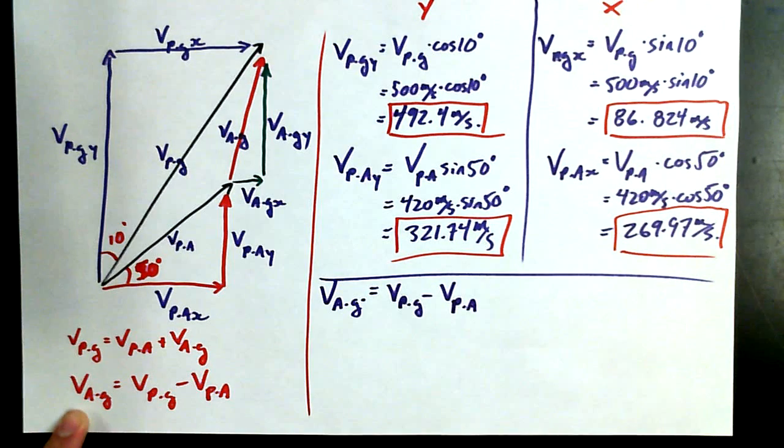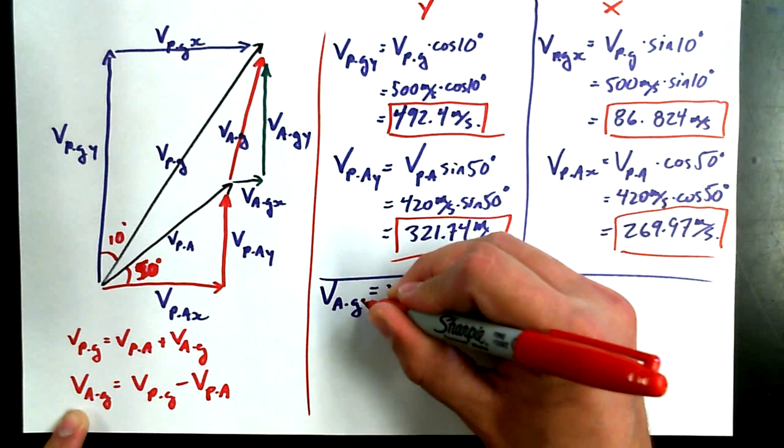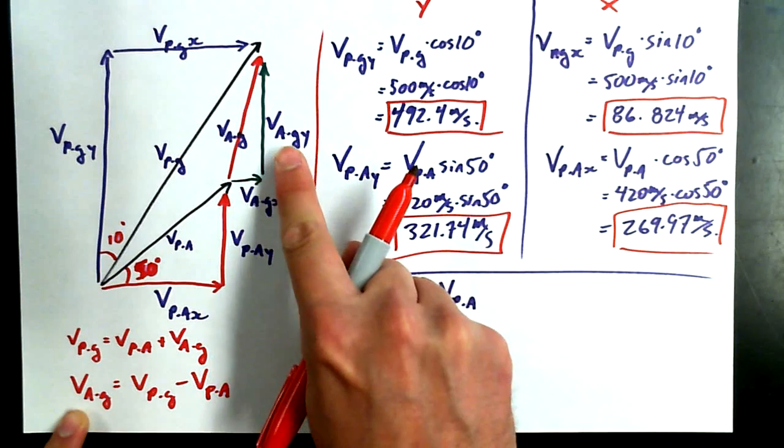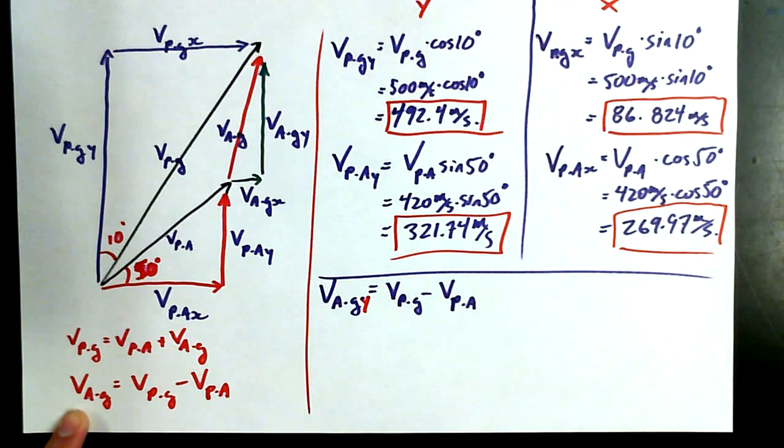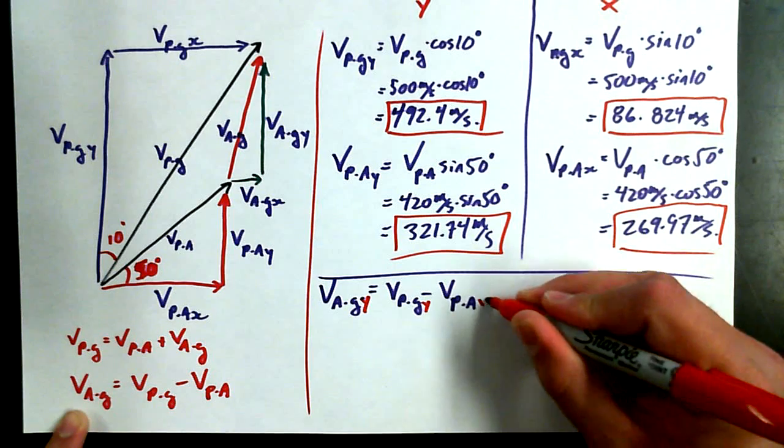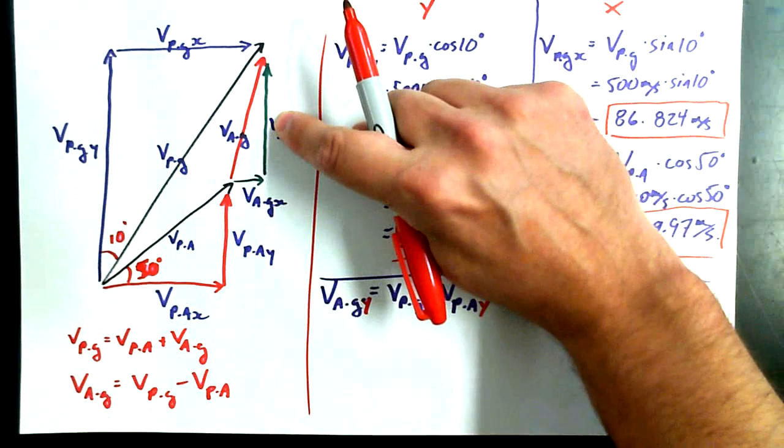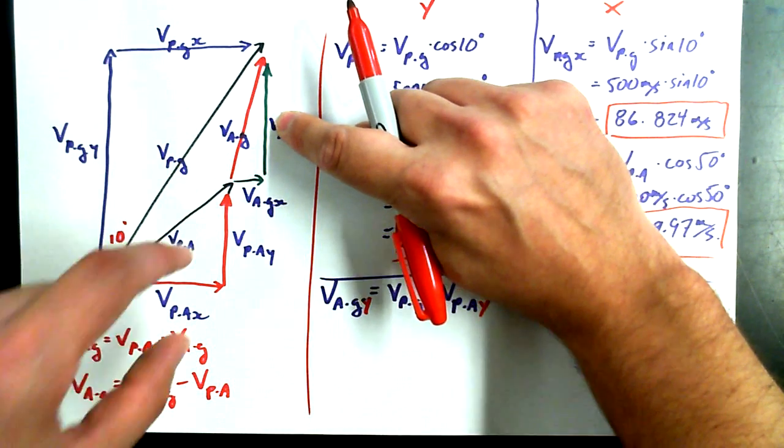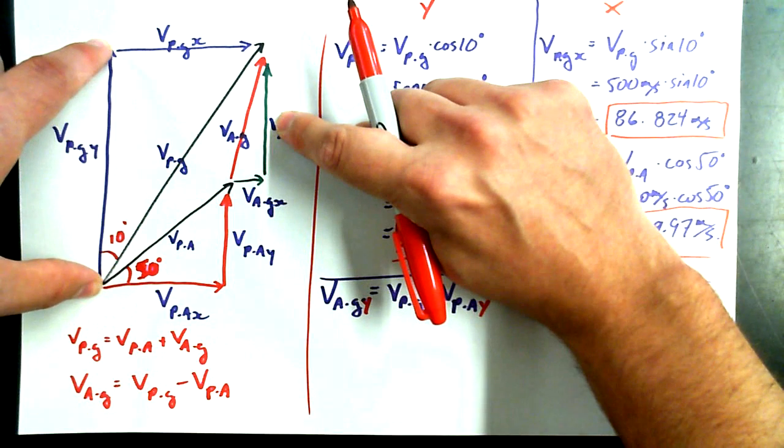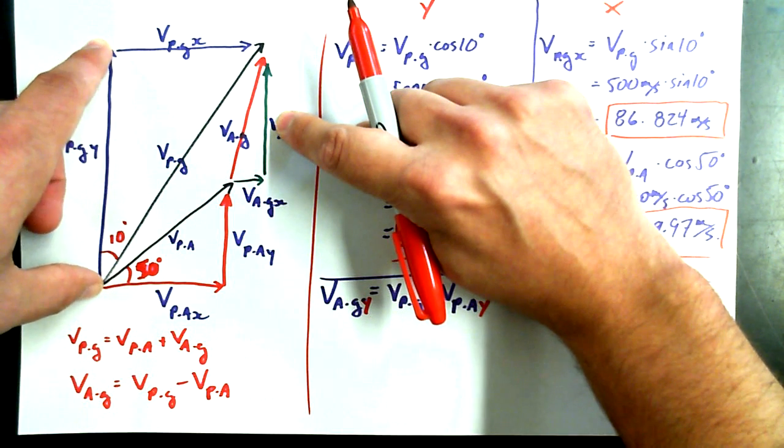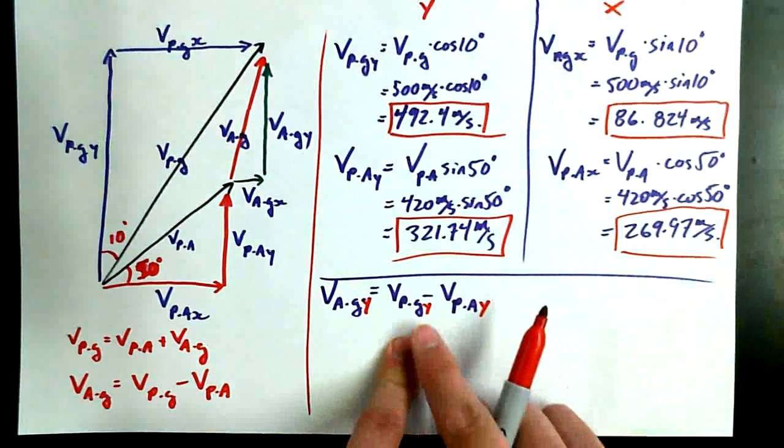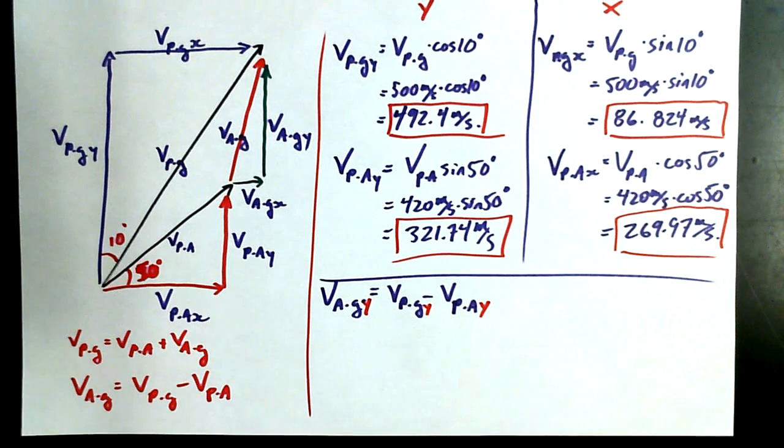And now the claim I want to make is that V, A, G in the Y direction, because that's what I want here, by the way. That's this value right here. V, A, G in the Y direction should be equal to V, P, G in the Y direction minus V, P, A in the Y direction. Let's check to see if that sort of matches with logic in terms of the picture. Okay. If I want to get this little value here that I drew in green, can I get it by subtracting this value from this value? Okay. The algebra matches the picture. Beautiful. Beautiful. I love it when a plan comes together.